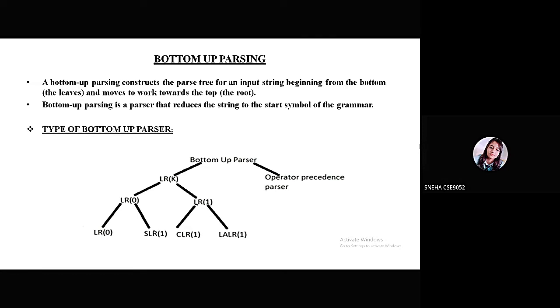It reduces the string to the start symbol of the grammar. Bottom-up parsers are divided into two major types: LRK, where K is the number of lookaheads, and operator precedence parsers. It is further categorized into LR0 and LR1 parsers. We will now discuss both of these types using some examples.